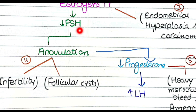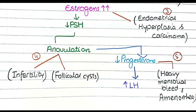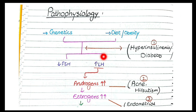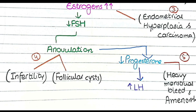With decreased FSH, the process of follicle growth will not be proper and most cycles will become anovulatory. One reason is the lack of follicle stimulating hormone; another is that LH is constantly elevated rather than showing the normal decrease that triggers ovulation. This hormonal disturbance causes anovulation, and when ovulation does not happen, the egg is not released, resulting in infertility — a very important feature of polycystic ovarian syndrome.